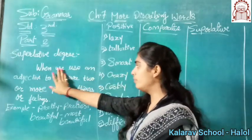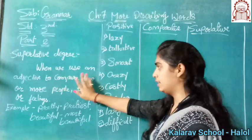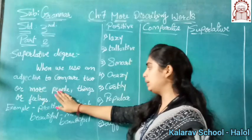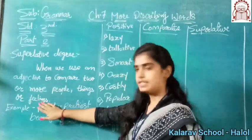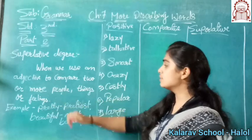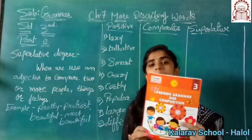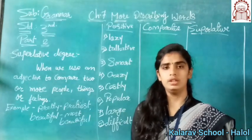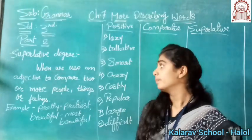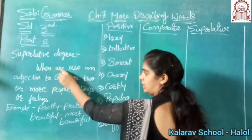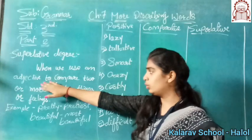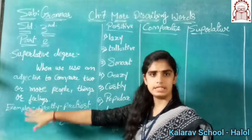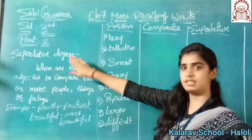So see here. When we use an adjective to compare two or more people, things or feelings — children, this definition is given in your book. Take out your grammar workbook, your page number is 33. Now see again: when we use an adjective to compare two or more people, things or feelings, at that time it is superlative degree.